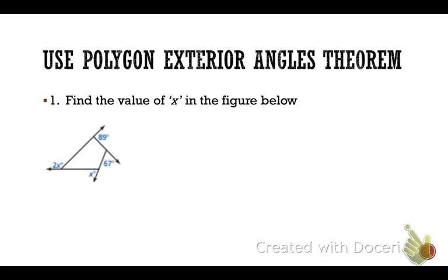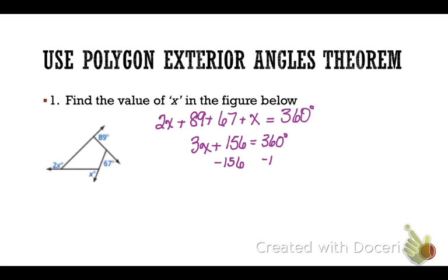Well, I know if I add up all of those sides, it has to equal 360 degrees because of the exterior angles of a polygon theorem. So now I'm going to combine like terms and solve this equation, and I get that x equals 68.